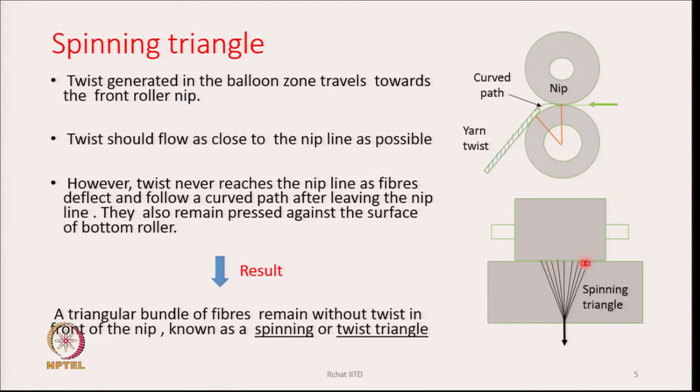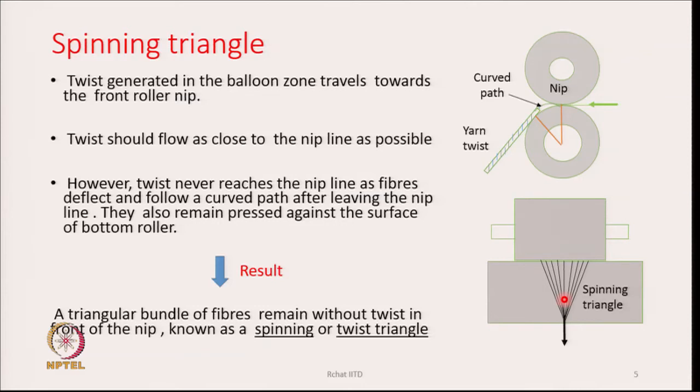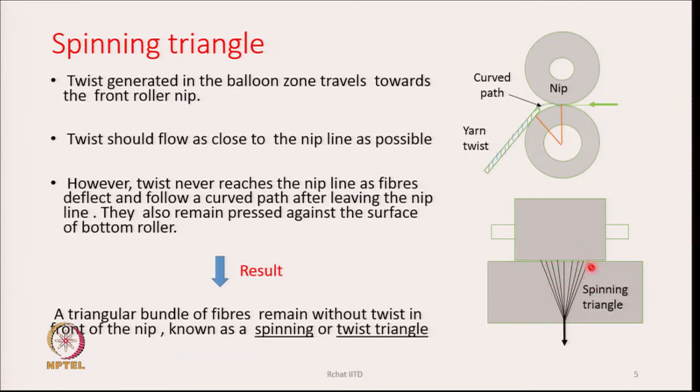Therefore, the torque available in the yarn does not flow right up to the nip point. Hence we get a triangular array of fibers in front of the nip, and these fibers remain untwisted. We know that twist and strength go together in spun yarns — the more the twist, the more the strength. However, if we go beyond the optimum twist, the strength may fall. There is a part of the yarn that remains untwisted because the twist cannot flow there, and therefore this zone is vulnerable to breakage.